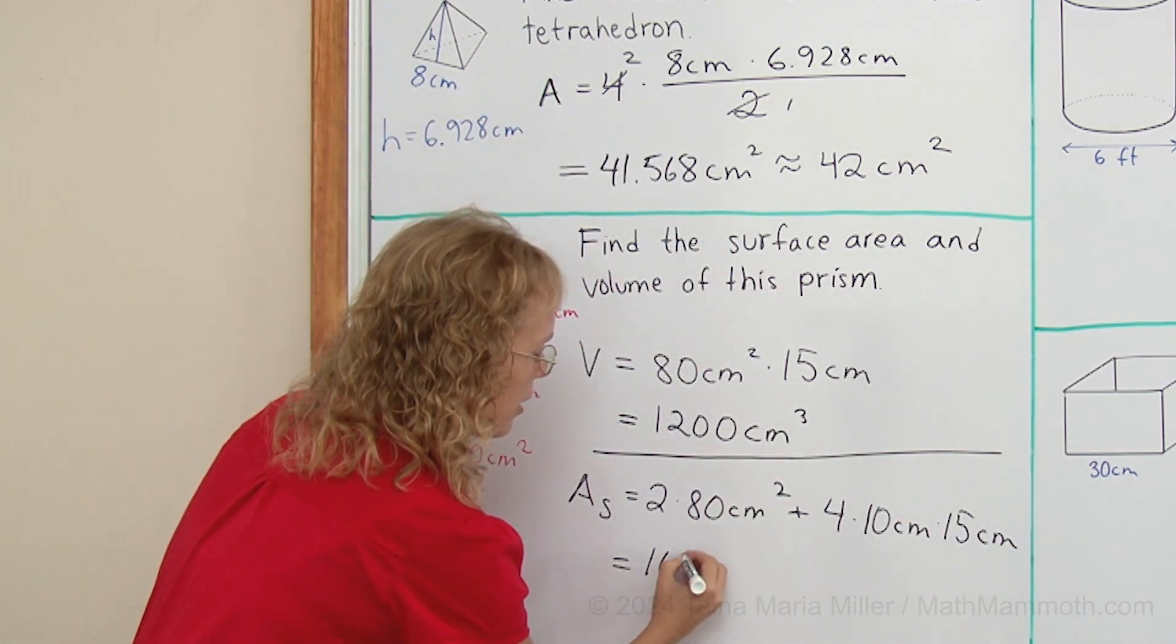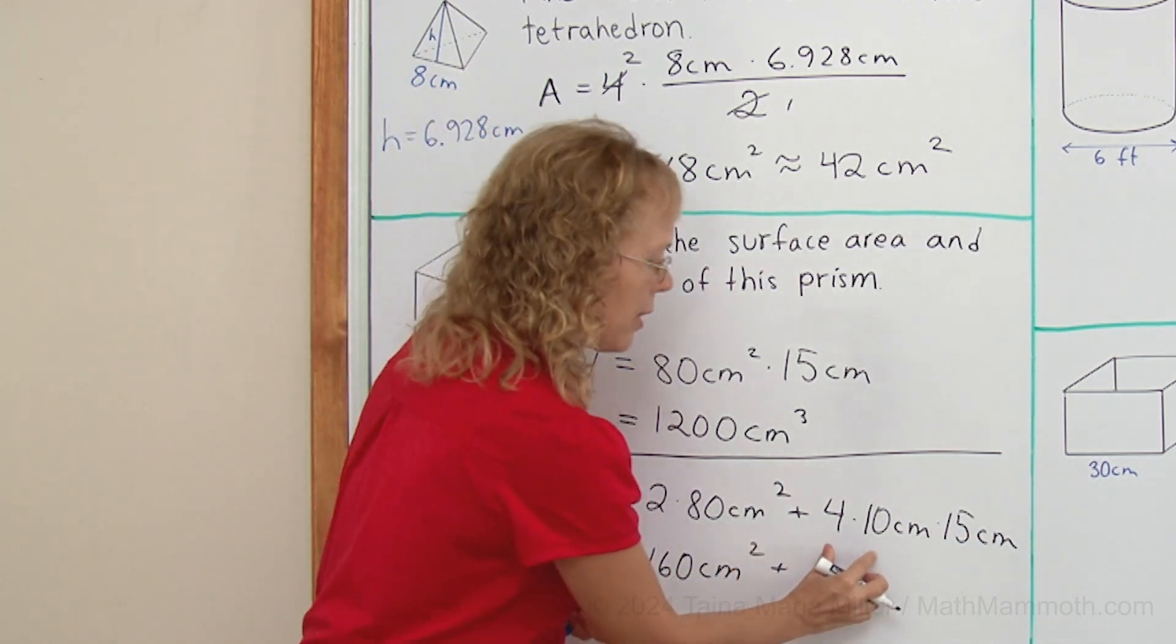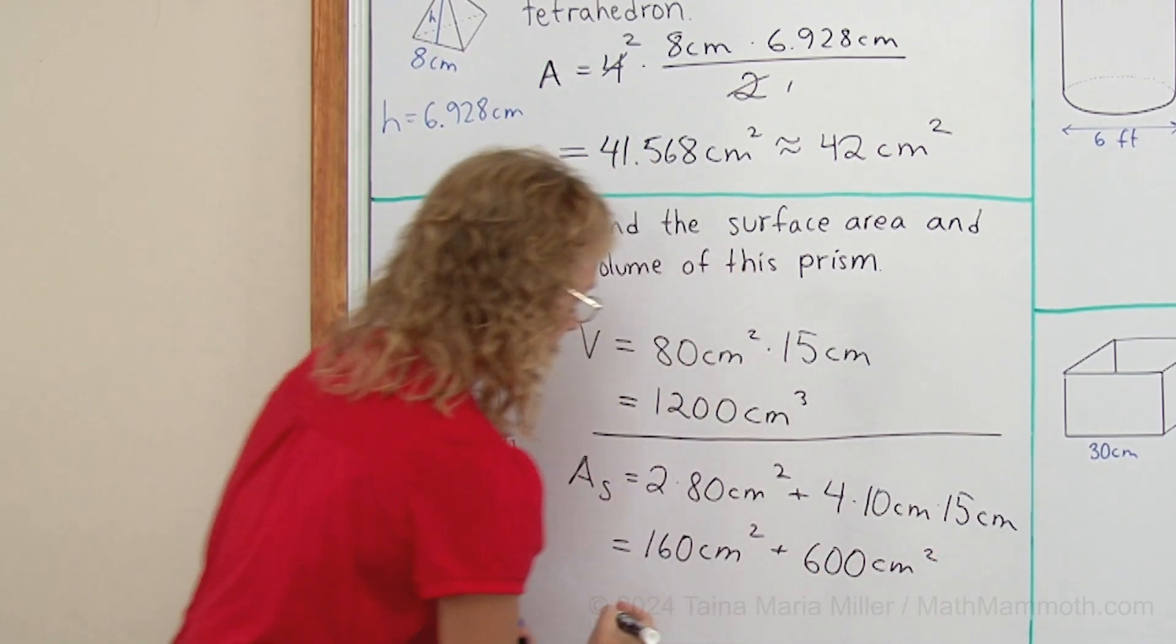So here is of course 160 square centimeters. And then add 600 square centimeters. So in total 760 square centimeters.